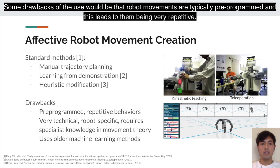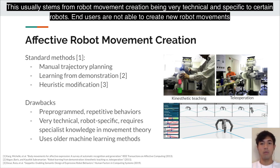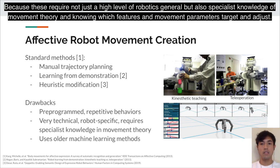Some drawbacks to these are that robot movements are typically pre-programmed, leading to them being very repetitive. This stems from robot movement creation being very technical and specific to certain robots. It's not something that end users are able to do, because it requires not just a high level of robotics knowledge in general, but specialist knowledge in movement theory — knowing which features and movement parameters to target and adjust.